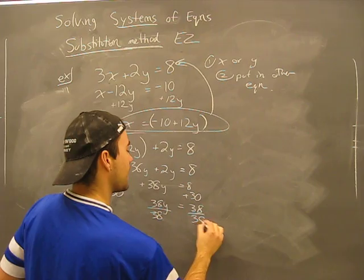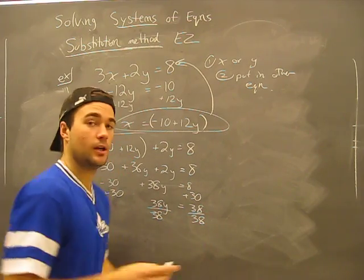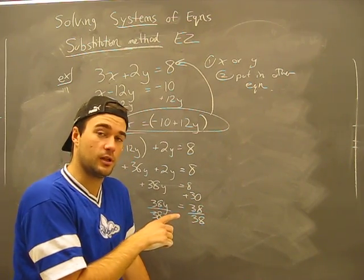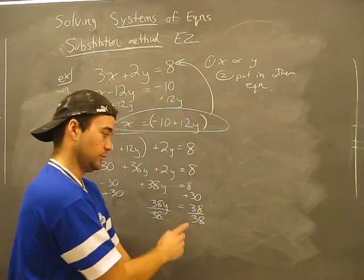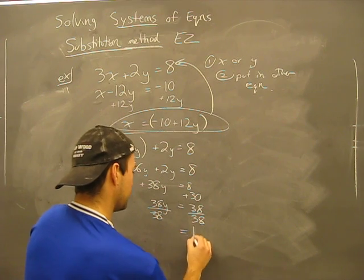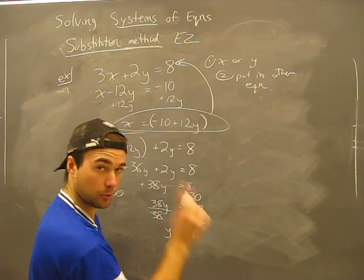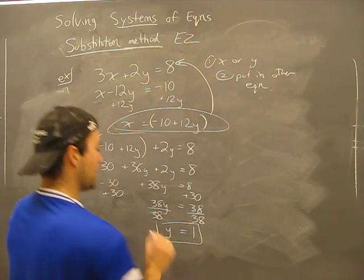Sometimes it can be an ugly fraction. If you ever get an ugly fraction when you're doing this, you might want to double check your work to be sure. Usually you'll get good looking numbers. Thirty-eight is a good looking number because it cancels out to one, that's a really good looking number. Y is one.